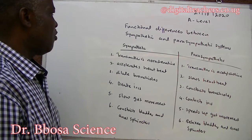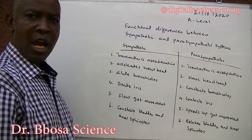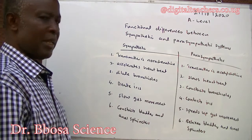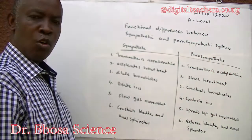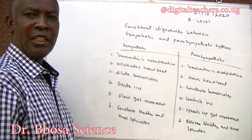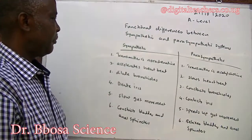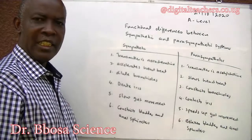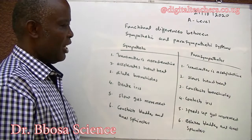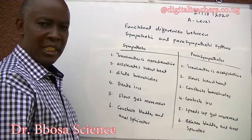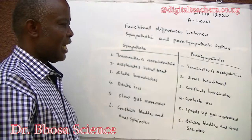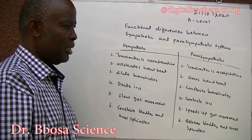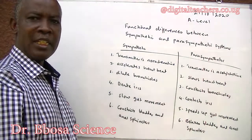Functional differences between sympathetic and parasympathetic systems: in general, they control contrasting characteristics. In the sympathetic system, the transmitter is noradrenaline; in the parasympathetic, the transmitter is acetylcholine. The sympathetic accelerates the heartbeat, while the parasympathetic slows the heartbeat.